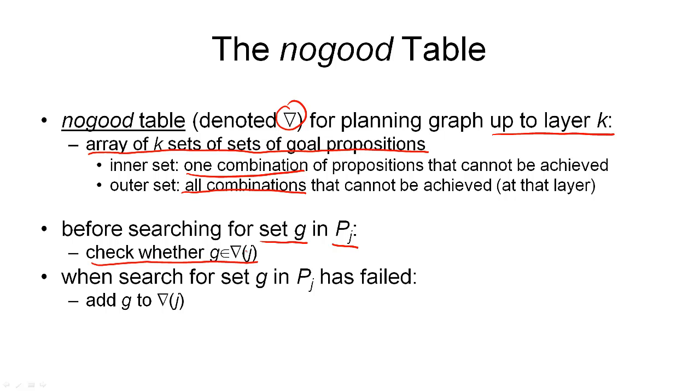So whether it is in the J-th layer, and we failed here before. If it wasn't in that layer, then we have to search for the set G in this layer P_J. And this will either succeed, in which case we have found a plan, or it will fail. And then we have to add our sub-goal to nabla of J, remembering that this is a sub-goal at which we have failed before in the J-th proposition layer.